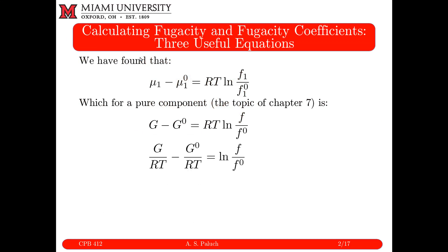We start with our definition from the last set of notes. For an isothermal process, mu1 minus mu1-naught is equal to RT log F1 over F-naught. So mu1 corresponds to my chemical potential of component 1, and F1 is my fugacity of component 1. These correspond to my chemical potential and fugacity at my conditions of interest — a given temperature and pressure.